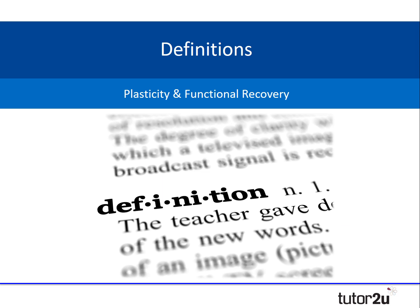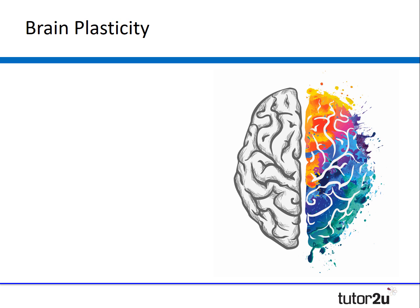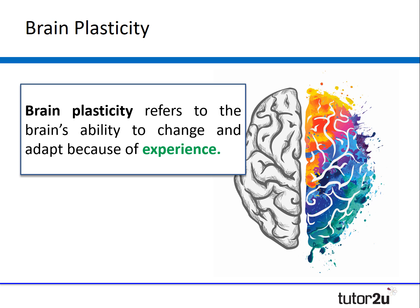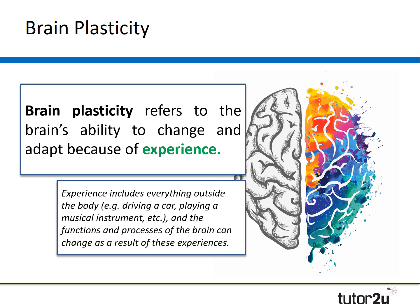Let's start by looking at the definitions for plasticity and functional recovery. The brain is not a static organ and the functions and processes of the brain can change as a result of experience and injury. Brain plasticity refers to the brain's ability to change and adapt as a result of experience, and researchers demonstrated that the brain continues to create new neural pathways and alter existing ones in response to changing experiences. Experience can include anything outside the human body, for example driving a car or playing a musical instrument.